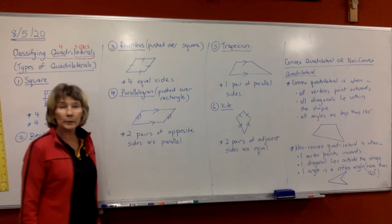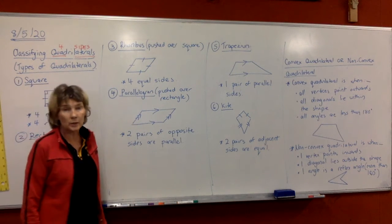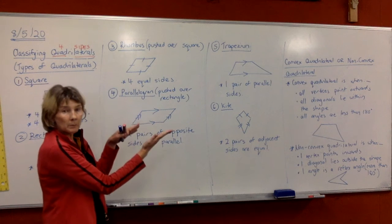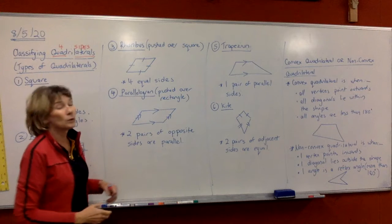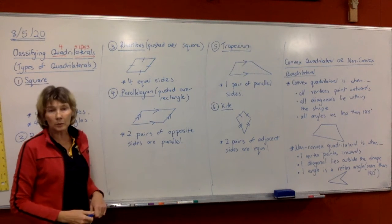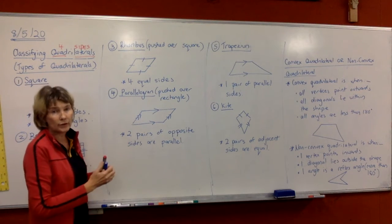In number three we have a rhombus. Think of a rhombus as a pushed over square. So it starts as a square, push it over to the left or right, doesn't matter which way, and you're forming a rhombus. So it still has its four equal sides but you push the angles out of shape.